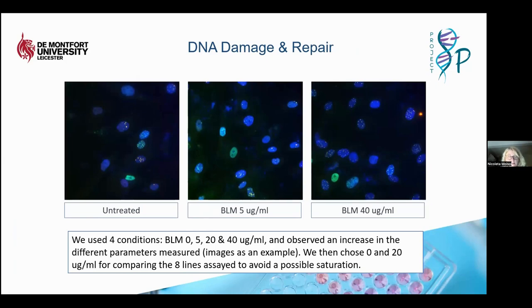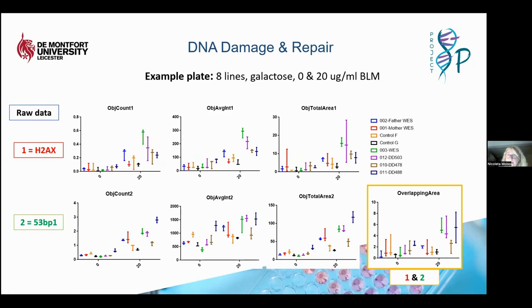So this is how our assay looks. The nuclei of the cells are labeled in blue. After treatment with bleomycin, we get sites of DNA damage and repair where the two proteins — H2AX and 53BP1 — are targeted. When there is a DNA break, these proteins are targeted to that site and are involved in the repair process. H2AX has long been the key protein used to detect DNA damage and repair; more recently 53BP1 has been added to this assay. We tested various concentrations of bleomycin, selected 20 micrograms per ml where there is no saturation of the assay. We are measuring the number of foci in the nucleus, the fluorescence intensity, the average intensity, and the area of each spot — for both markers — and also the overlap number and area.